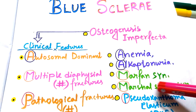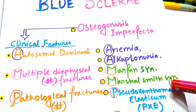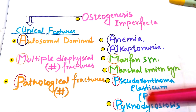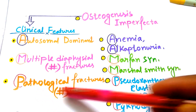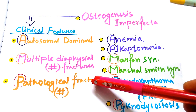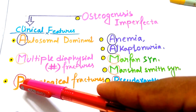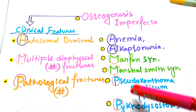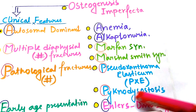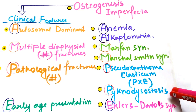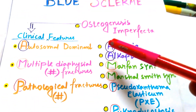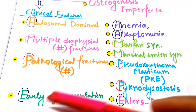M stands for Marfan syndrome and Marshall Smith syndrome. For P, we can find pathological fractures — multiple pathological fractures — so P stands for pseudoxanthoma elasticum and pycnodysostosis.